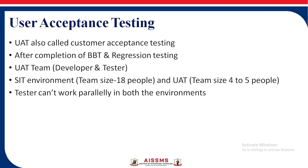User acceptance testing is also called customer acceptance testing. It is performed after completion of black box testing and regression testing. The UAT team consists of developers and testers. The SIT environment has a team size of 18 people, while the UAT team size is 4 to 5 people. The tester cannot work parallelly in both environments.